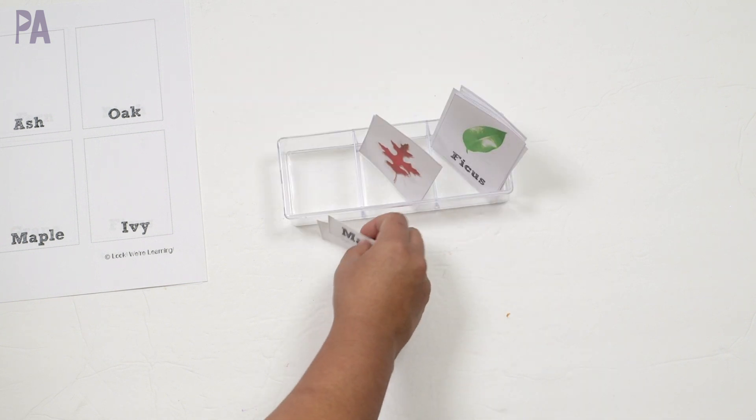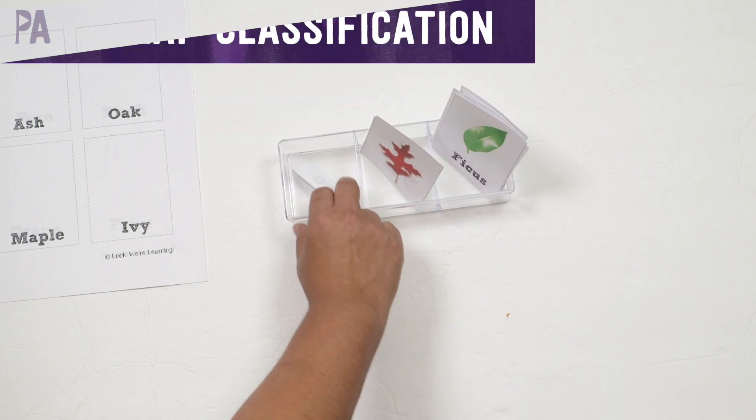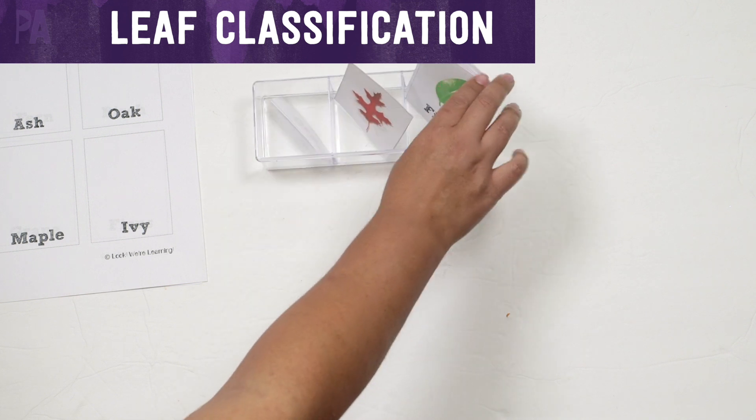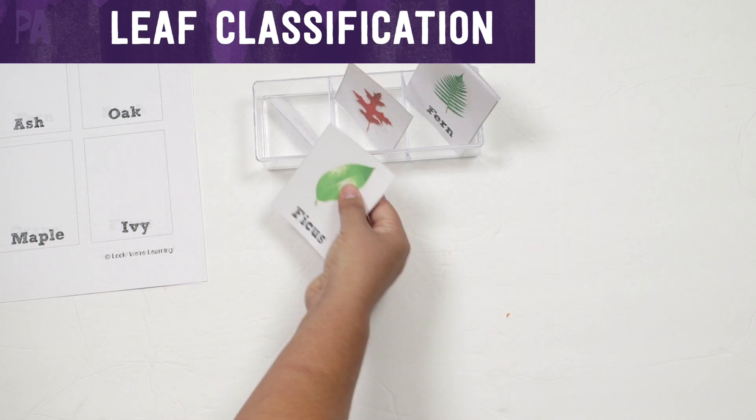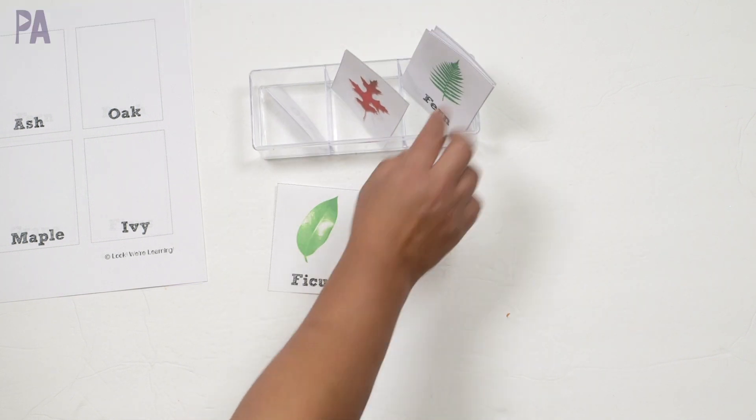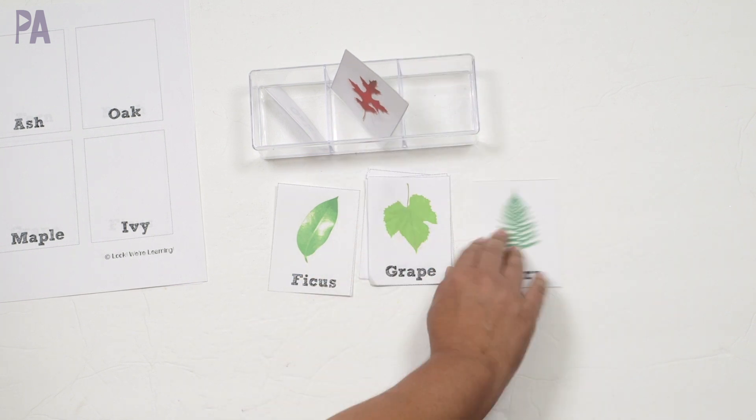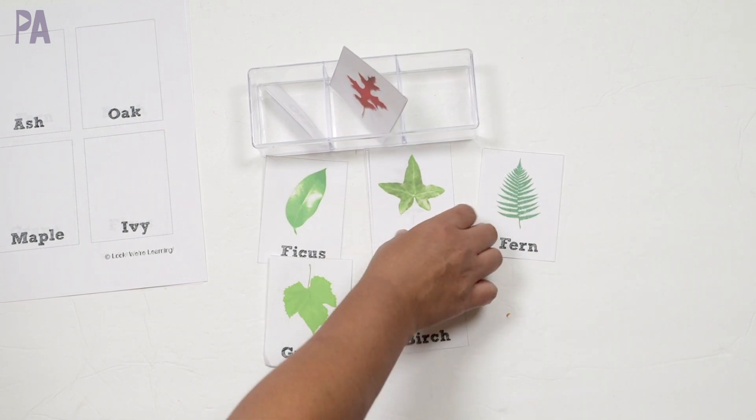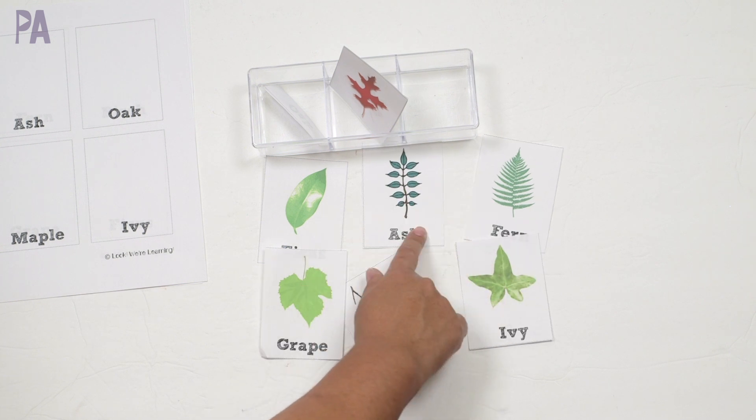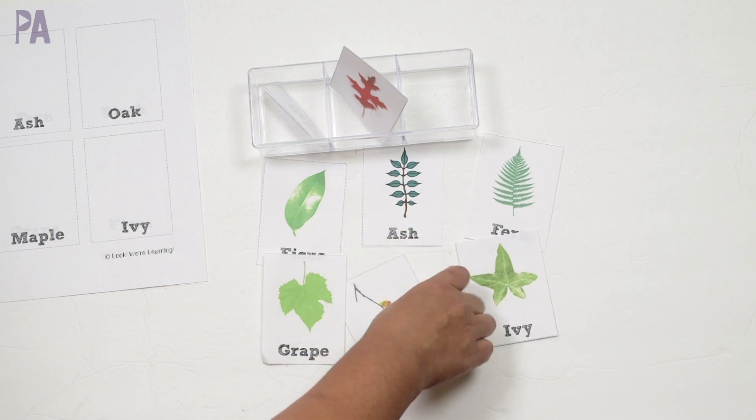If you have leaves in your backyard, maple, ficus, ash, ivy trees, that sort of thing, you'll be able to get real life samples from your backyard and then match them up to the pictures of the leaves. Like I said, we don't have a lot of trees in our neighborhood that fit these categories. But if you do, it's a great opportunity to match the leaves up to the pictures.